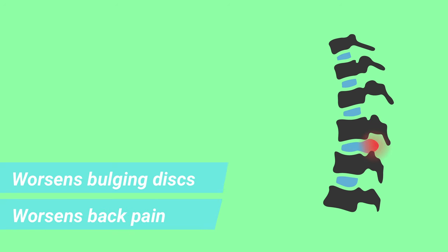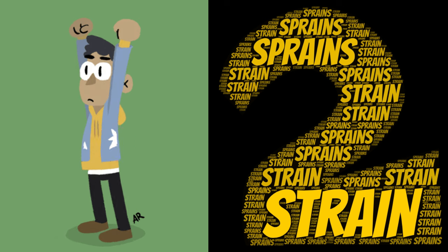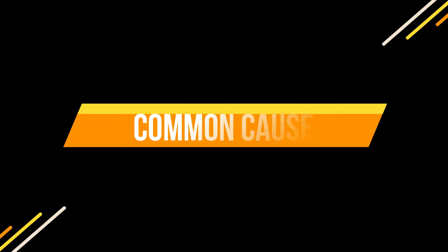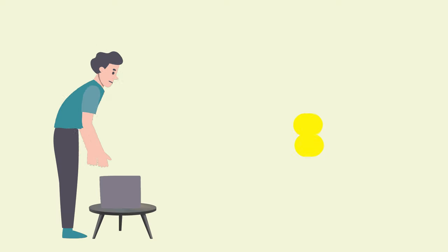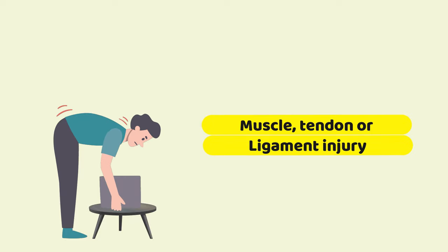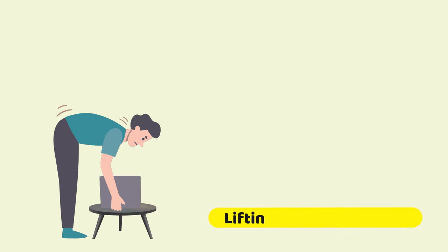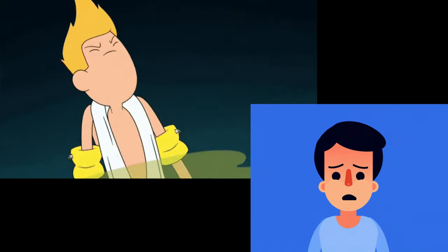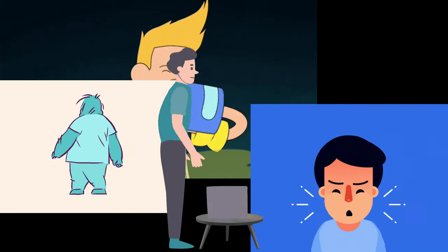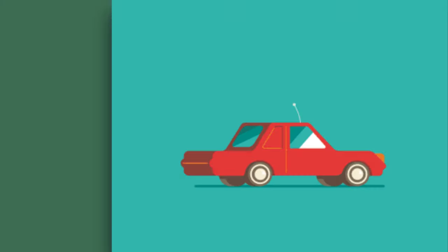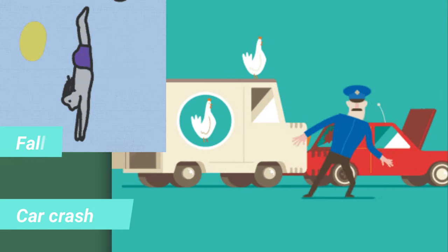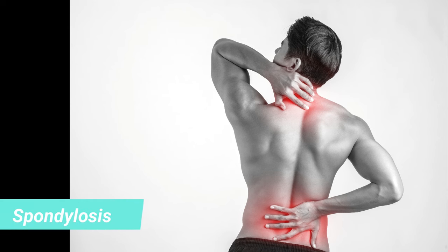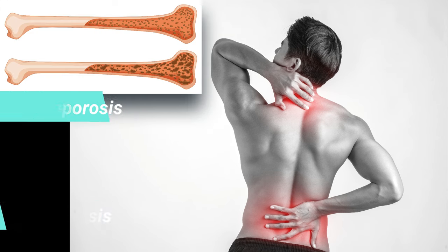Second is strains and sprains. Back strains and sprains, along with tight hamstrings, are one of the most common causes of back pain. You can injure muscles, tendons or ligaments by lifting something too heavy or not lifting it with proper posture. Some people strain their back while sneezing, coughing, twisting or bending over. Third is fracture. The bones in the spine can break during an accident like a car crash or a fall. Certain conditions such as spondylosis or osteoporosis can increase your risk of fractures.